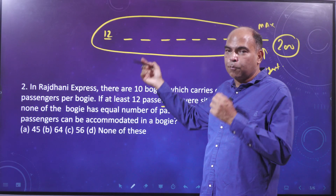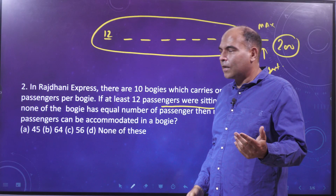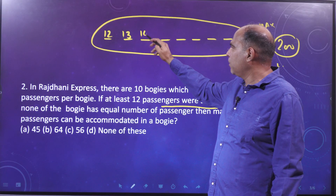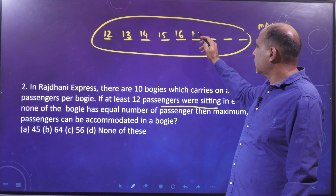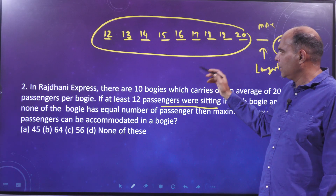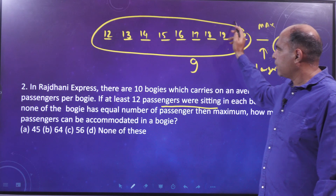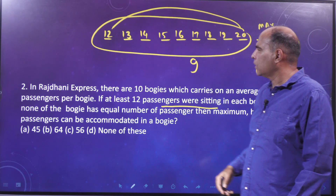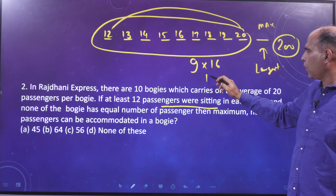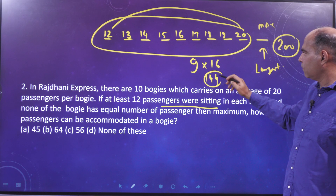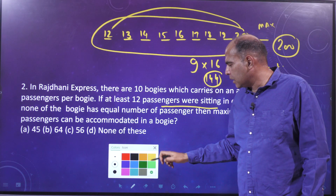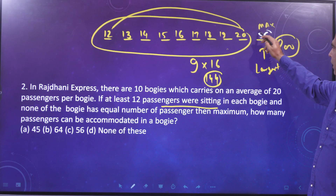For minimization, since each bogey must have a different number and at least 12, you use consecutive numbers starting from 12 up to 20 — nine numbers. These form an arithmetic progression with an average of 16, so 9 into 16 is 144. That means the maximum value for the 10th bogey is 200 minus 144, which is 56.